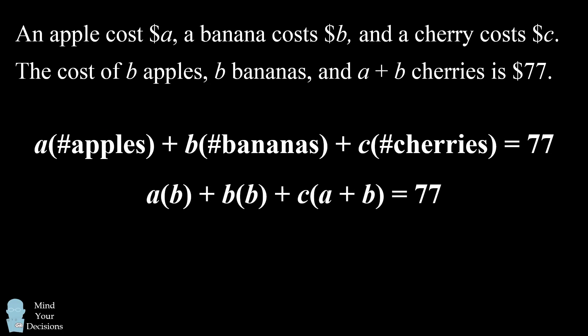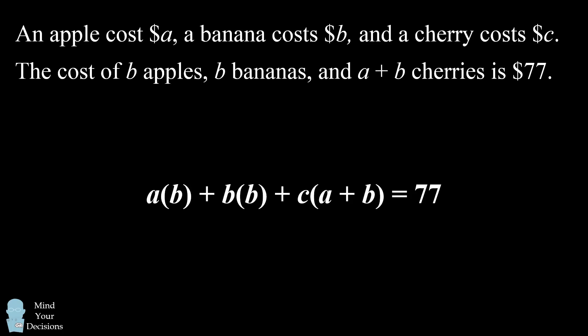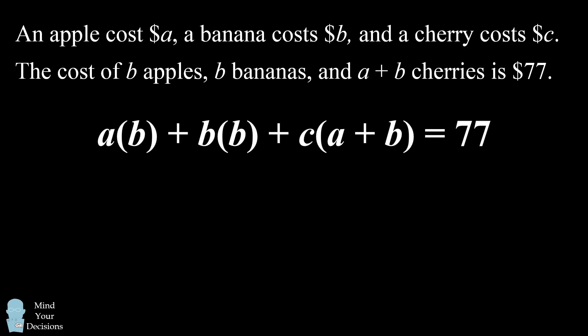So what can we do with this equation? Let's continue to see if there are any patterns. Notice that the first two terms have a common factor of B. So let's factor that B out, and we have B times the quantity A plus B.